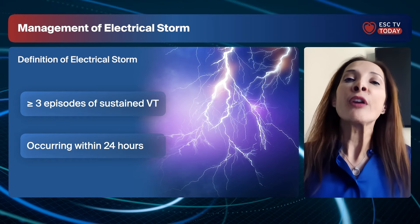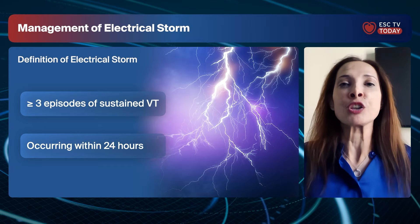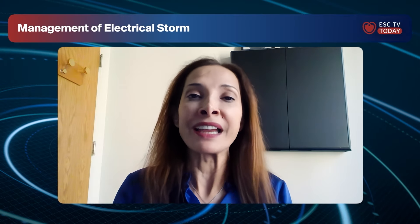There are several conditions that could lead to electrical storm, the most common of which are ischemic cardiomyopathy and non-ischemic cardiomyopathy. Patients with other conditions such as hypertrophic cardiomyopathy or inherited channelopathies can also present with electrical storms, so those should be kept in mind.